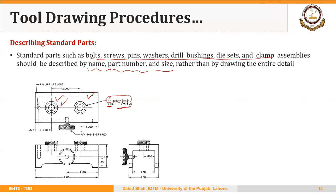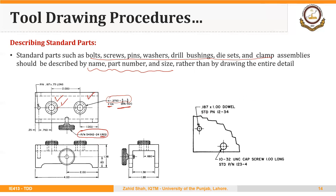The same is true for the screw — we mention its part number and refer to the bill of materials. Only one screw per assembly is needed in this case. Here is another example: a dowel pin described by part number with size 0.187 x 1, with further detail available from the bill of materials. The screw's part number is similarly noted.